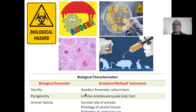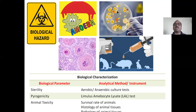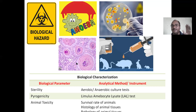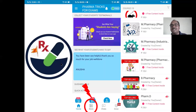Biological characterization includes: how many aerobic and anaerobic organisms are present in your preparation, determined by culture test. Pyrogenicity: whether your liposome has the property of increasing body temperature — determined using the Limulus amebocyte lysate (LAL) test. Animal toxicity: the survival rate of animals given the liposome, and histology — tissue pathology of animal tissue — to determine whether it is a biological hazard.